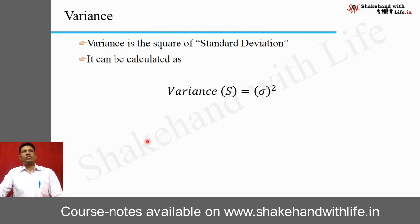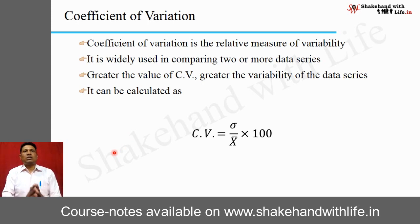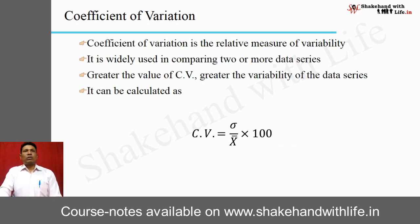Variance is the square of standard deviation, denoted by S. The relative measure of variability is the coefficient of variation (CV). CV is widely used for comparing two or more data series. A greater value of CV indicates greater variability, and if variability is high, the reliability of the data series is low. The formula for CV is: (standard deviation ÷ mean) × 100, expressed as a percentage.